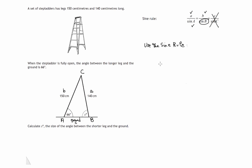So let's use the sine rule. The part we'll use is: a over sine A equals b over sine B. That means little a — 140 — over sine A — sine 66 degrees — equals little b — 150 — over sine B, which is sine x degrees.